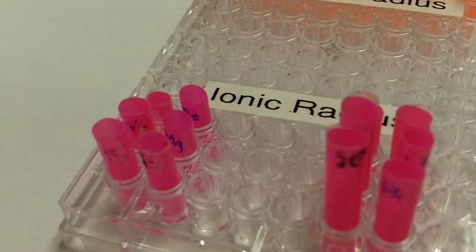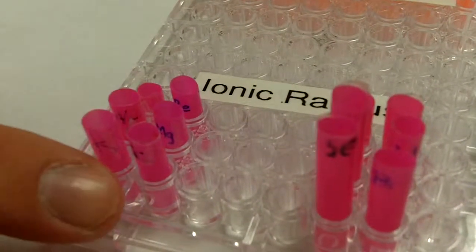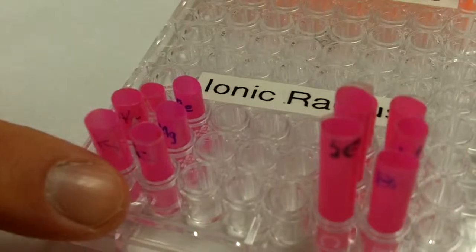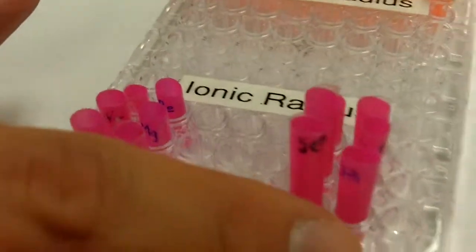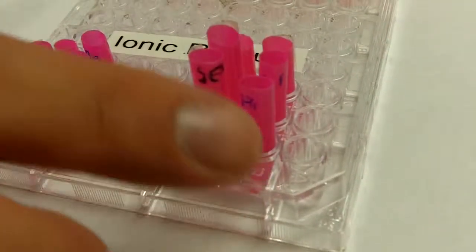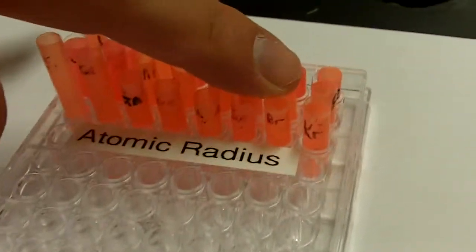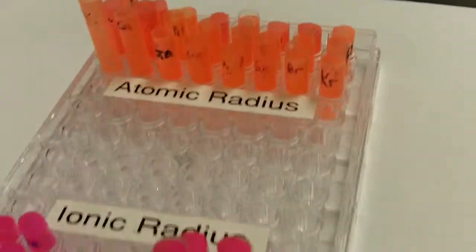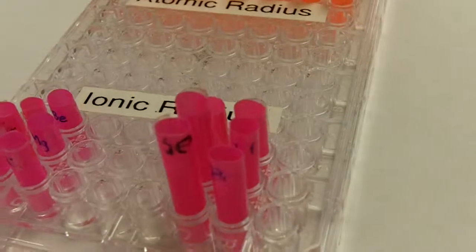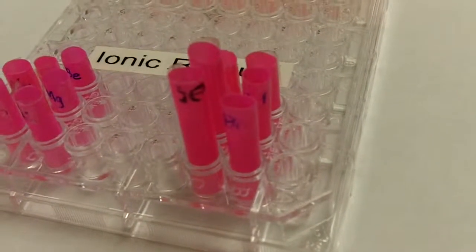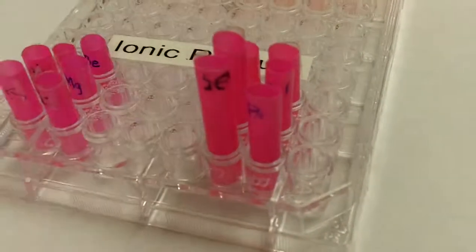And so they've dropped down an energy level. So these are always going to be the cations, positively charged, always smaller than the original. And then over here, we have the anions, which are always going to be larger than the original atomic counterpart, because they've gained an electron, and they sort of swell up a little bit, and these are all negatively charged.